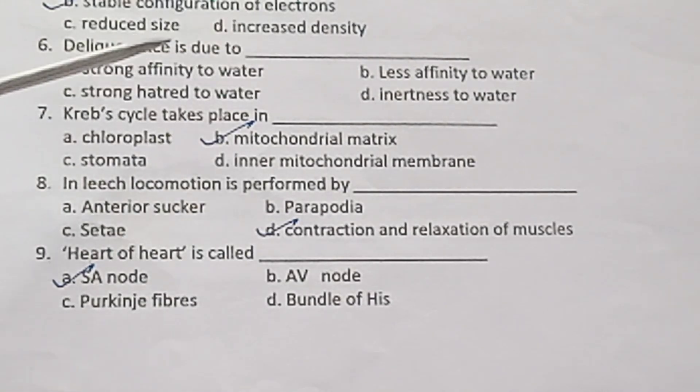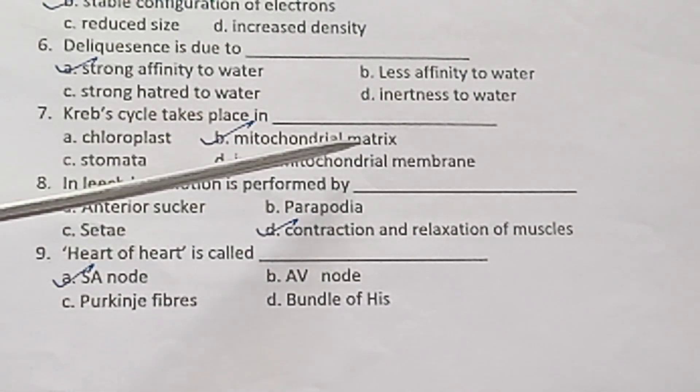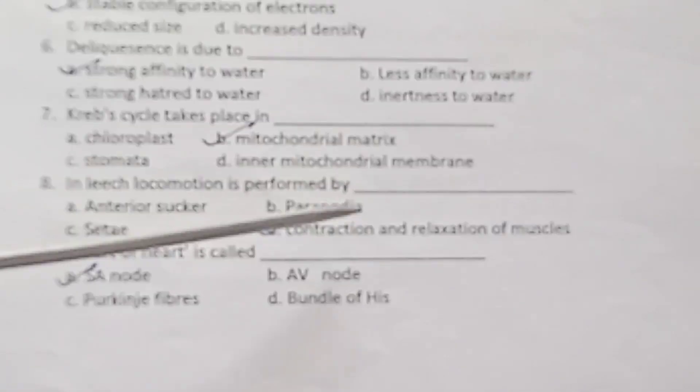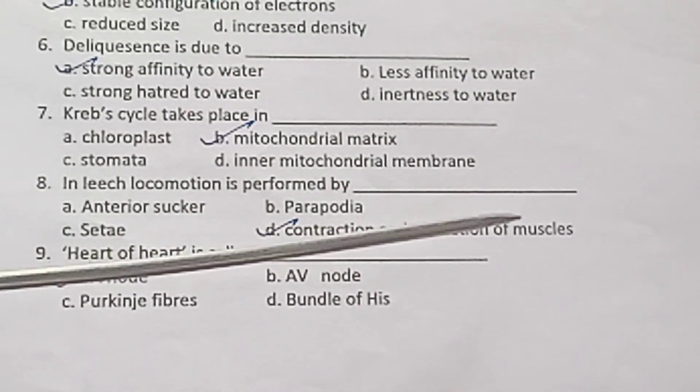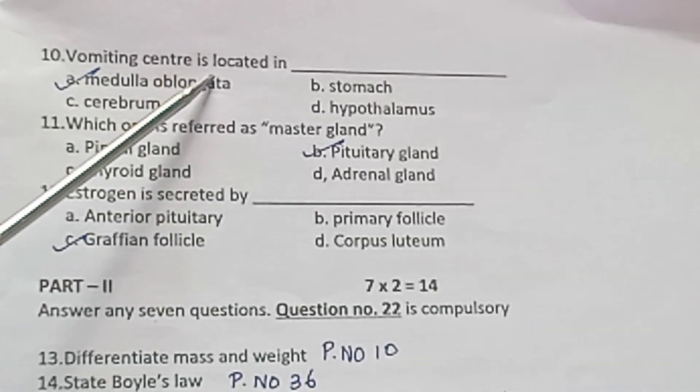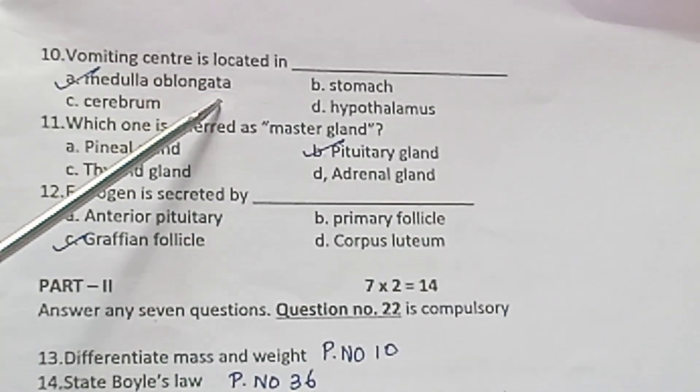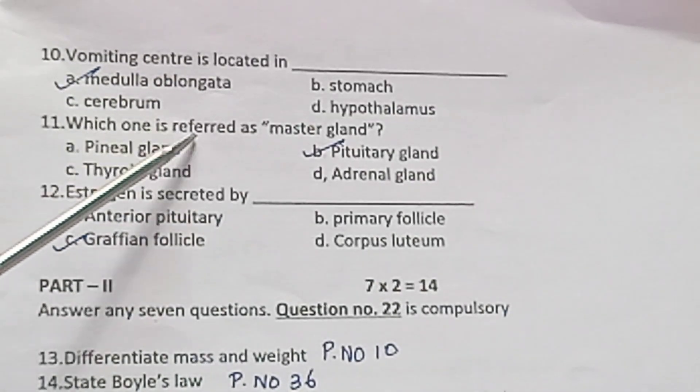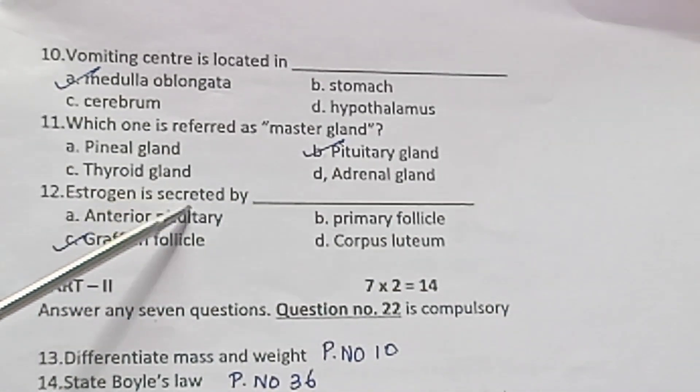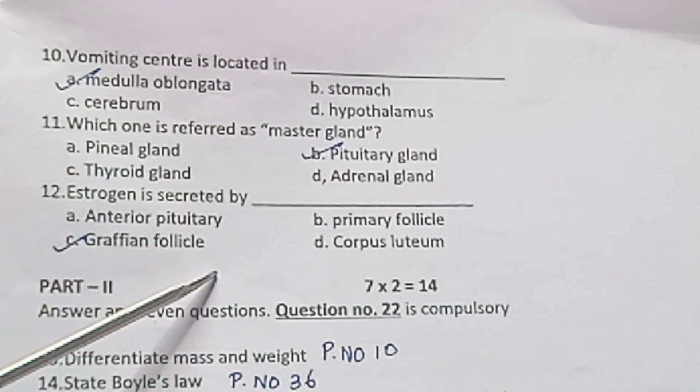Deliquescence is due to strong affinity to water. Krebs cycle takes place in mitochondrial matrix. In leech, locomotion is performed by contraction and relaxation of muscles. Heart of heart is called SA node. Vomiting center is located in medulla oblongata. Which one is referred as master gland? Pituitary gland. Estrogen is secreted by Graafian follicle.